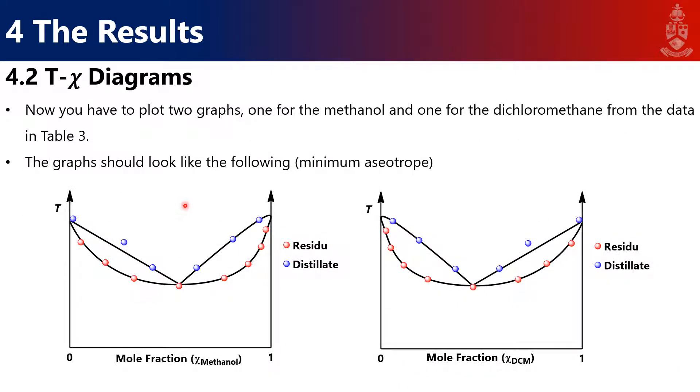This will give you graphs that look like this, depending on which one you chose. If you chose mole fraction methanol, it should look something like this. Mole fraction DCM looks something like this. It should be a minimum azeotrope. You'll have a residue line that goes like this and distillate data points that go like this. That's essentially your T-x, or temperature-composition diagram, from which you're going to read off your azeotrope mixture.